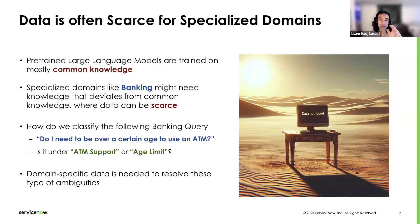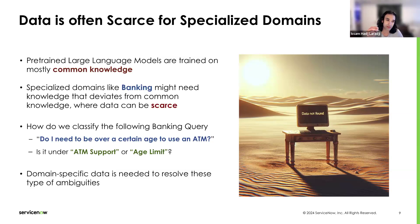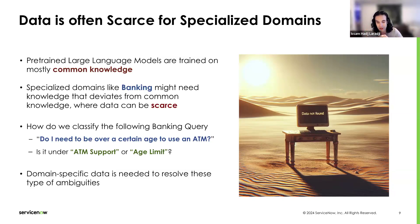The thing is, data is often scarce for specialized domains. Although these pre-trained large language models have been trained on vast data, they mostly capture common knowledge. Specialized domains like banking might need knowledge that deviates from that common knowledge, where data can be scarce. For example, how do we classify the query: 'Do I need to be over a certain age to use an ATM?' Should this go under ATM support or age limit, since it contains both words? This ambiguity means we need either more data or a better description of the classes.